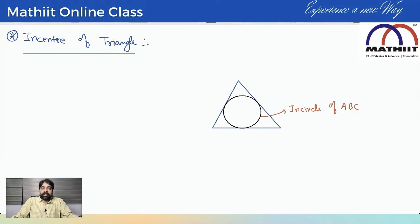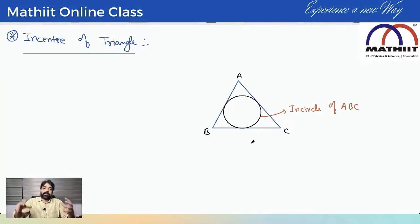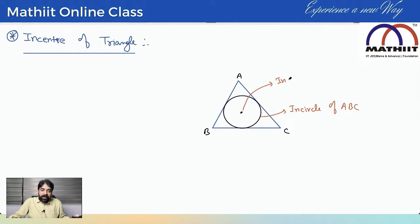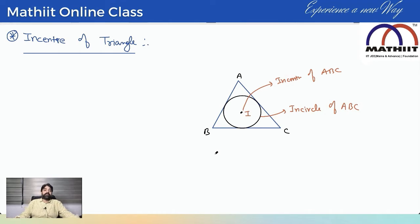If this triangle is ABC, the in-circle is the circle which is inscribed inside the triangle, touching all three sides. The center of this circle is called the in-center of ABC, represented by capital I.